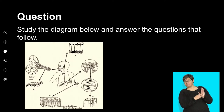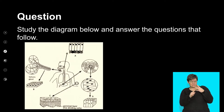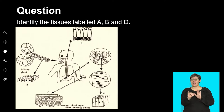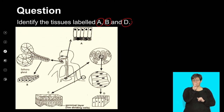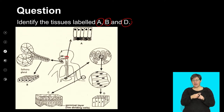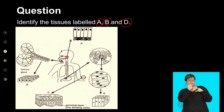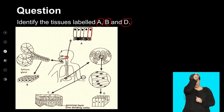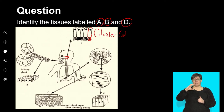Let's look at a question on epithelial tissue. The question says study the diagram and answer the questions that follow. There's a structure in the middle with cells around it. The first part asks you to identify tissues labeled A, B, and D. They give you the tissue shape and the location — that is really helpful. Looking at label A, the cells are column-shaped with little hairs at the bottom, so this is going to be ciliated columnar epithelium.